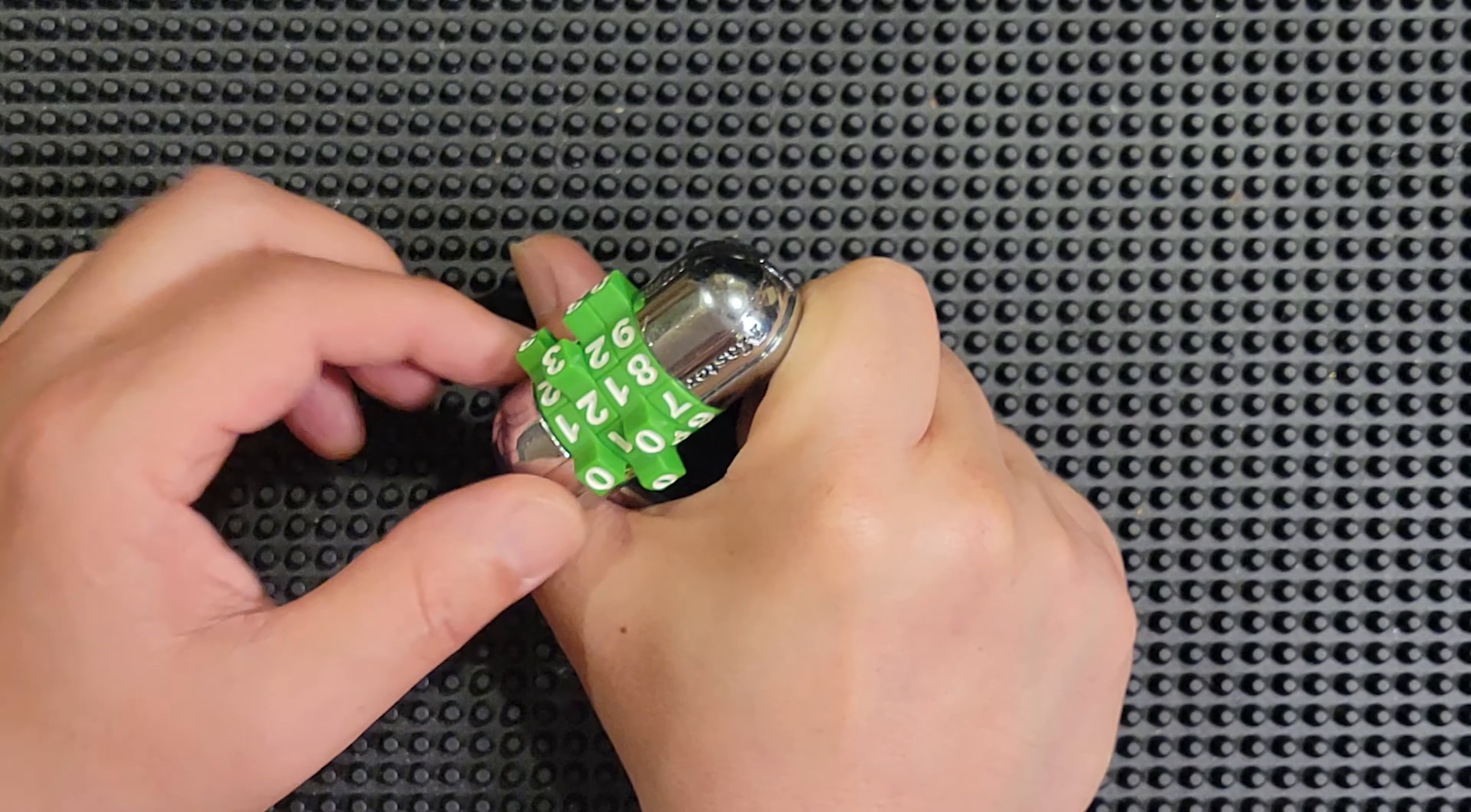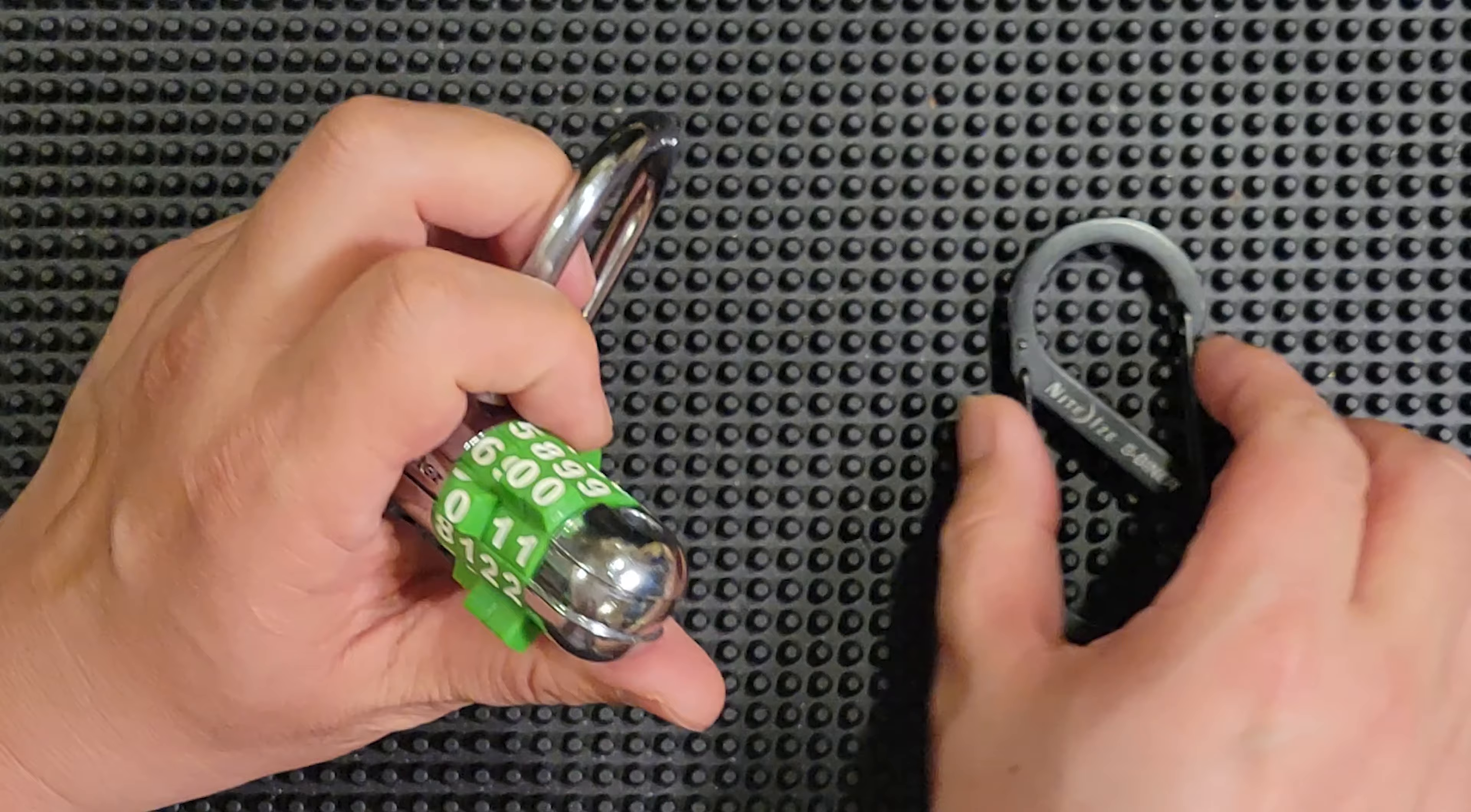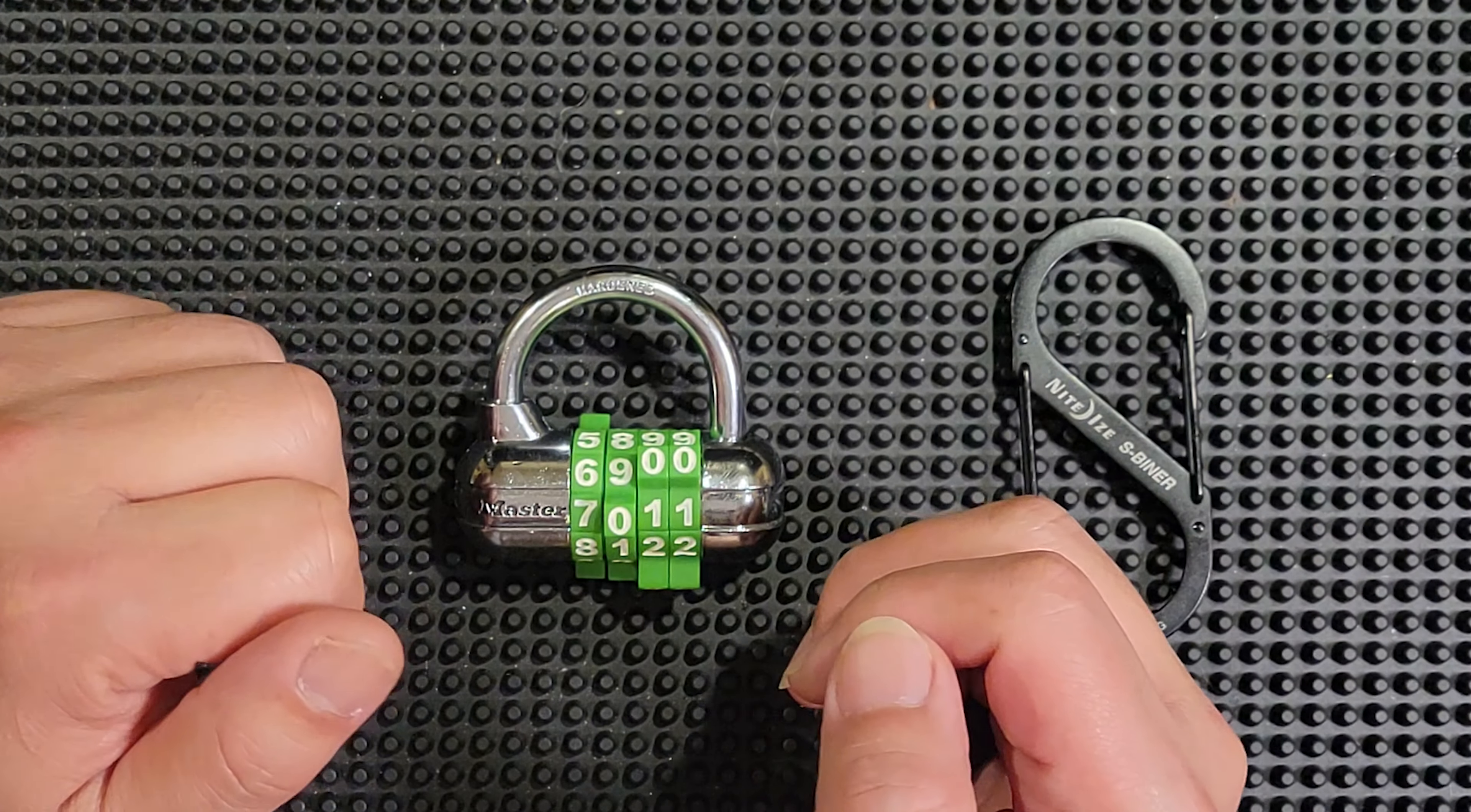And I'm going. And there it is one. So our combination is seven, zero, one, one. So that's that. This is how a Masterlock 1523D works and how to decode it.